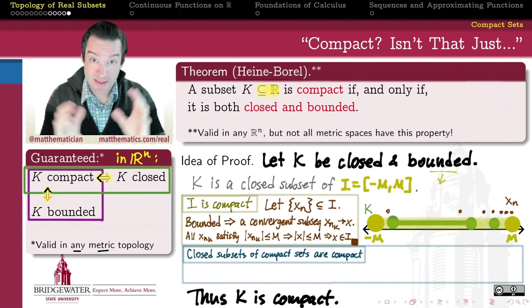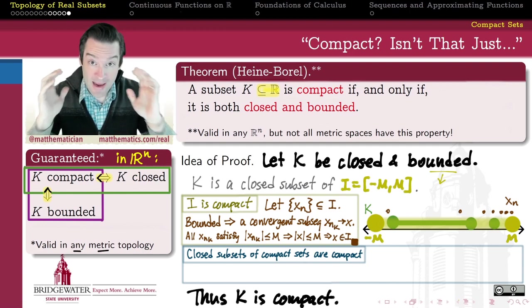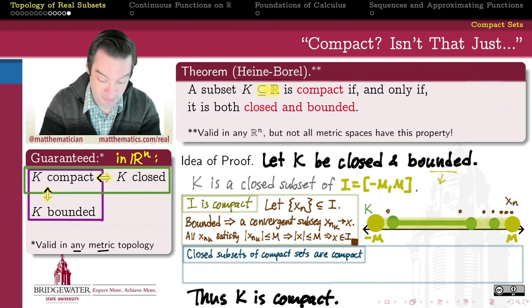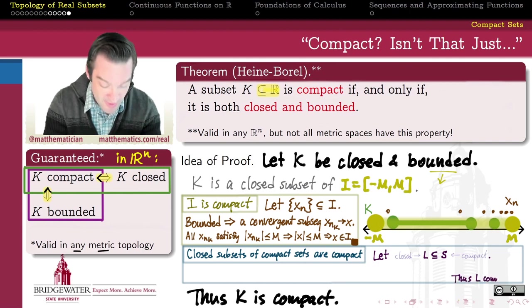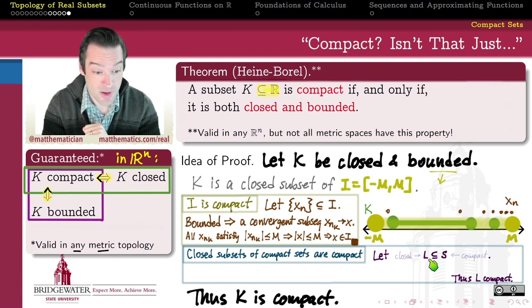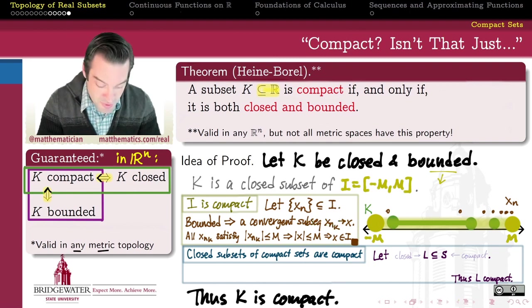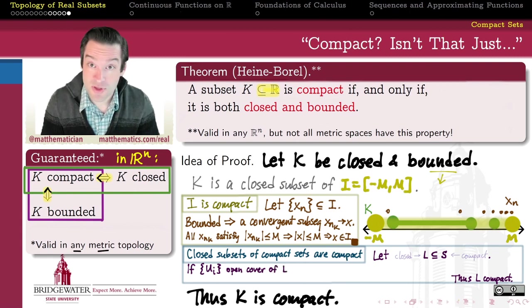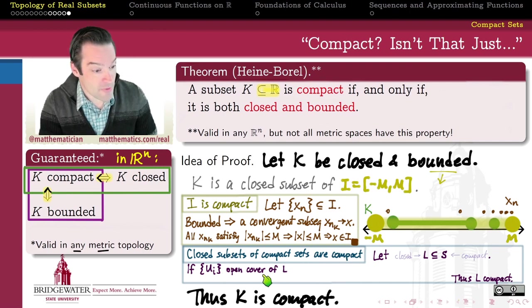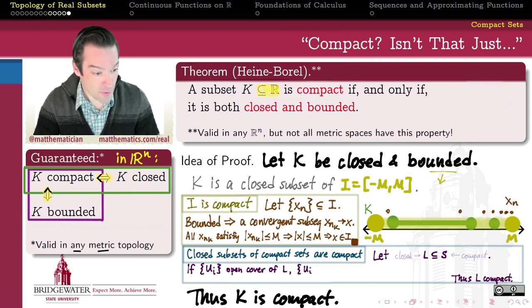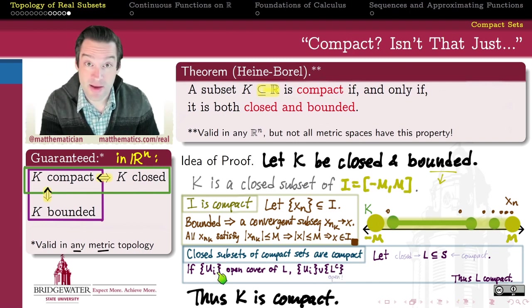We've shown that the closed interval containing K is itself compact. Now we need to show that compactness inherits from a compact set down to any closed subset thereof. This result is more general than the real analysis setting. Let S be any compact set and L a closed subset of S; we want to show L is compact. We already used subsequential completeness to prove the interval is compact, so for variety let's appeal to cover finiteness to establish the compactness of L.